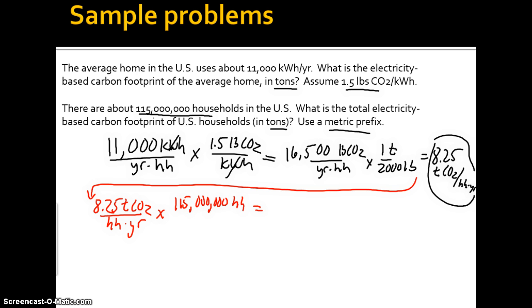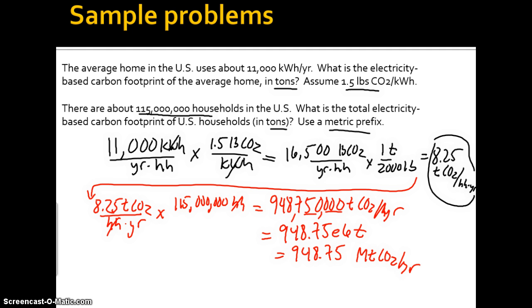So we just multiply by 115 and we're going to get 948,750,000. So we're going to convert this, and this is tons of CO2 per year. Because households are going to cancel out. And so this is going to give us, to go into a metric prefix, it's going to be 948.75, and this is 10 to the 6 tons, which is 948.75 megatons of CO2 per year. And that is our answer.